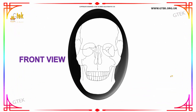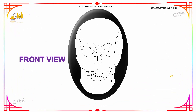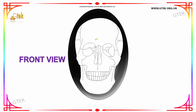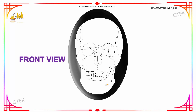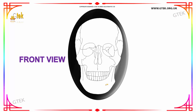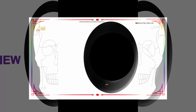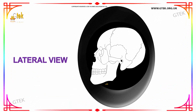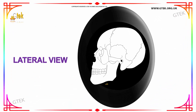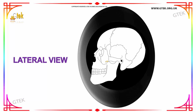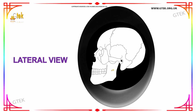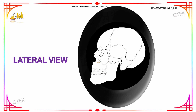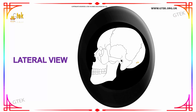Next we are going to see the front view of a human skull. This is how the human skull looks like from the front. Next we have the lateral view of the human skull, and this is how the lateral view of the human skull looks like.